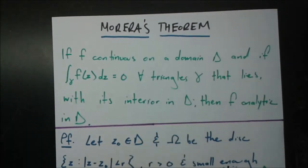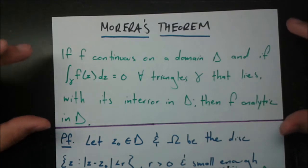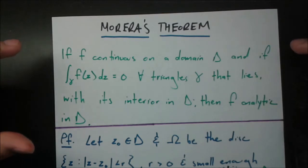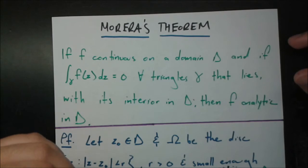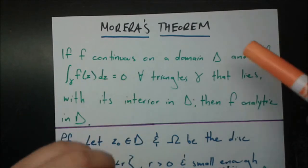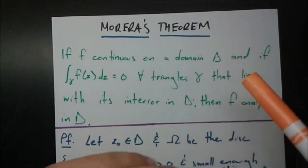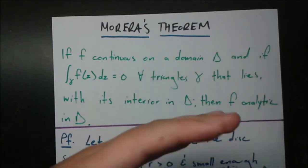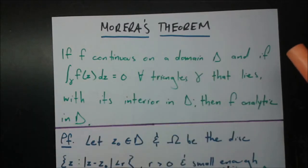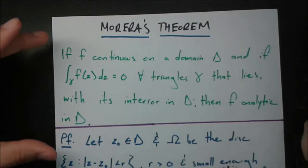On the surface this seems like a new theorem, but really if we look at it more closely, this is actually just the opposite of Cauchy's theorem. Remember how when we talked about Cauchy-Riemann equations, we talked about how they have a converse? The original theorem said that if a function is analytic on a domain, then the Cauchy-Riemann equations are met. But we also talked about a theorem that went the other way. So this is actually just the converse of Cauchy's theorem.